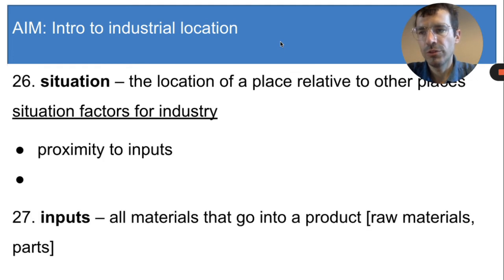There are two situation factors for industry, and the first is the proximity to inputs. Inputs are the materials that go into a product, and generally that means the raw materials. For some industries, it's important to be near the inputs so that those materials do not need to be shipped over long distances, which can cost the business owner a lot of money. That is especially true if the inputs are very heavy or bulky.